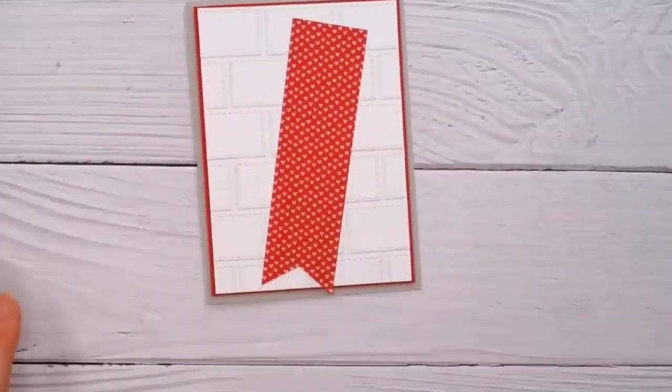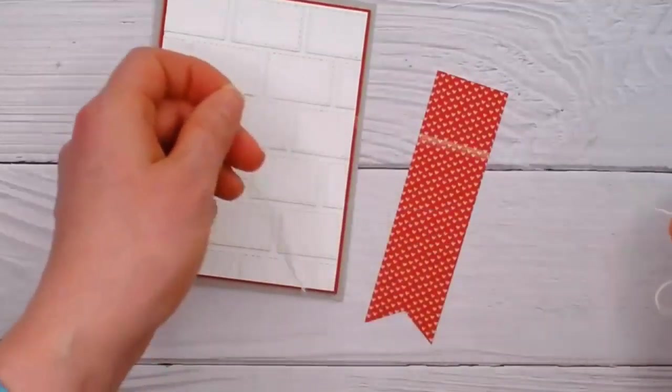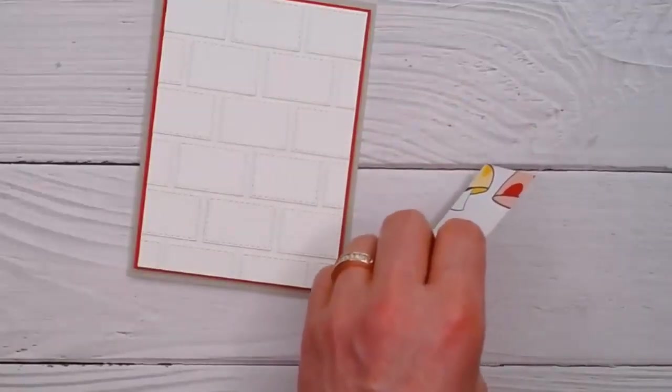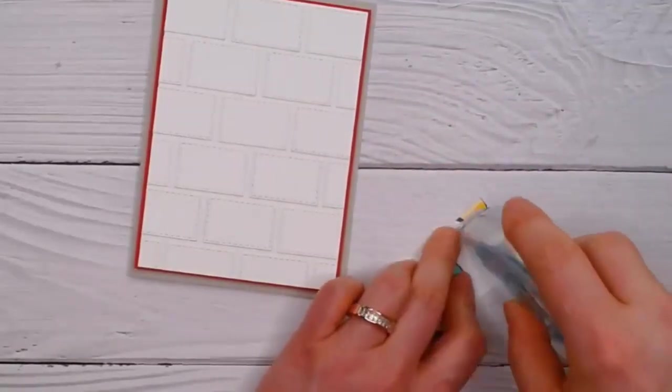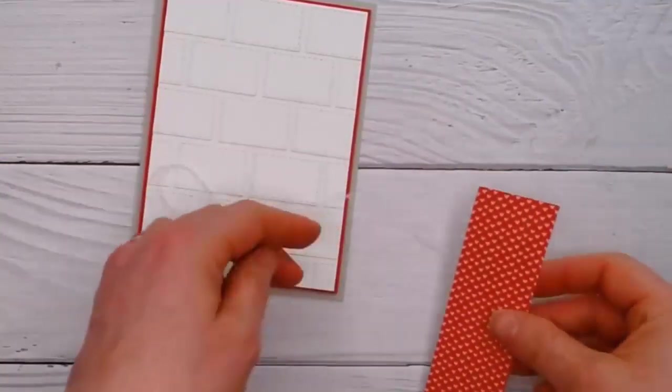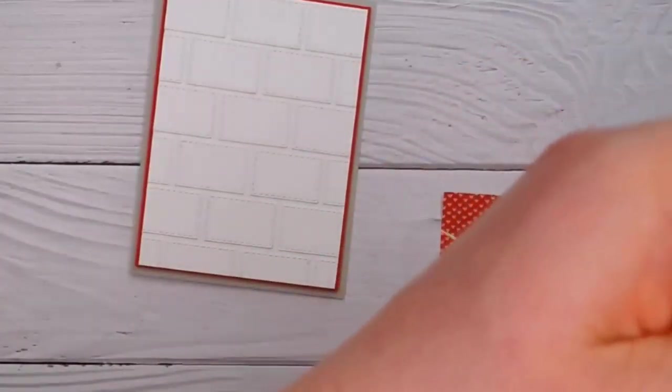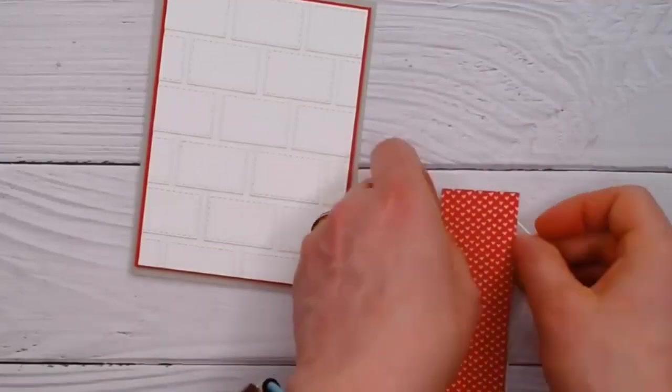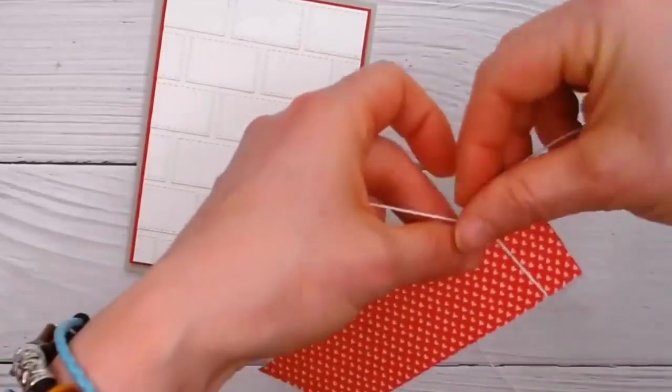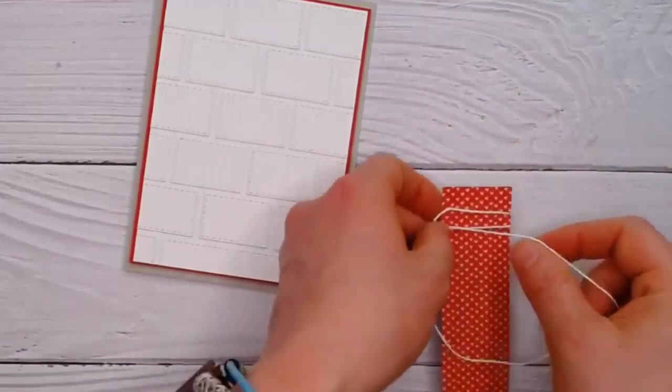Before I adhere that on though, I'm just going to tie a little bit of that white twine. My children have been busy making various things and my stuff seems to be going missing a lot. I'm just going to wrap it around. I put a little adhesive on the back just to hold it in place. So I've got it about half way and I'm just going to wrap it around here and then wrap it around here.